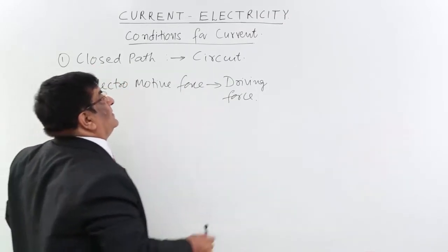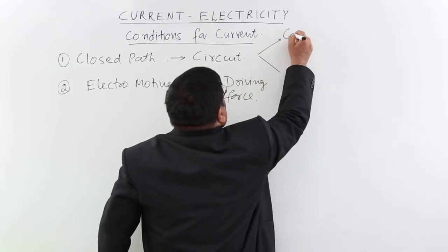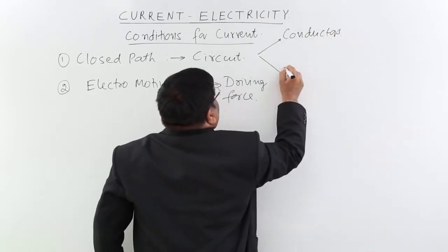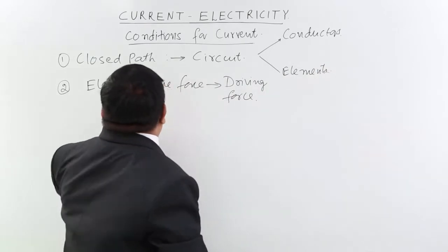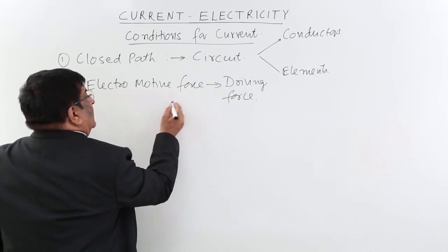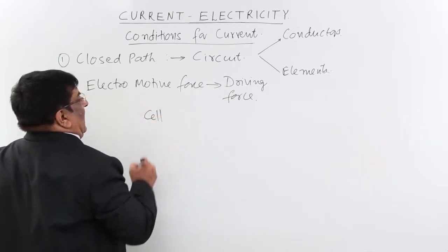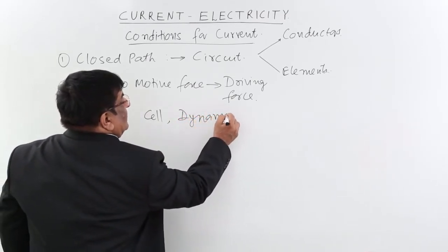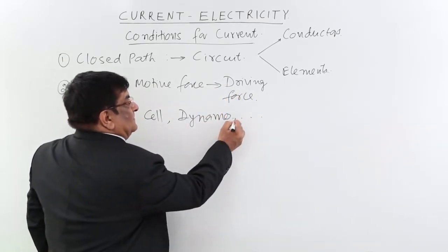In this closed path we have conductors and other members which we will call elements. For electromotive force, the driving force will be given by many things in our nature. One is a cell, another is a dynamo, and there may be other storage of energies.